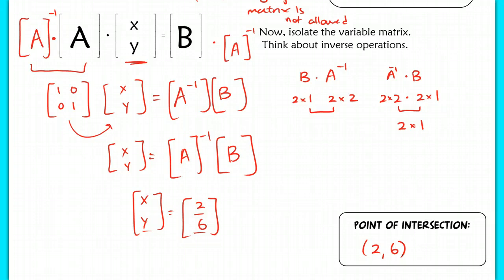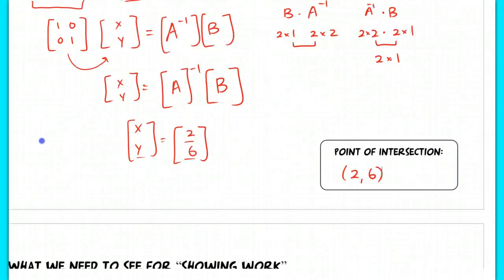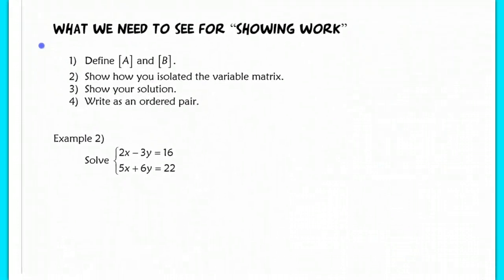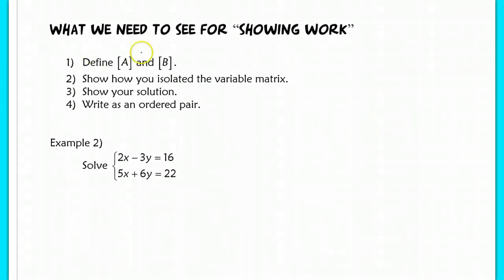Now I'm going to do one more problem with you and show you what I want to see as far as showing our work. So you're going to always define your matrices first. You need to do that every time. Then you're going to show how you isolate the variable matrix. So you're going to show using work how you get x, y by itself. Then you're going to show your solution as a matrix, and then you're going to finally write it as an ordered pair.